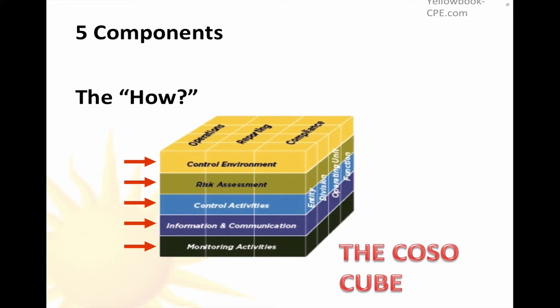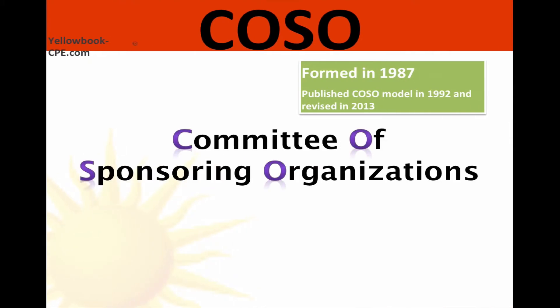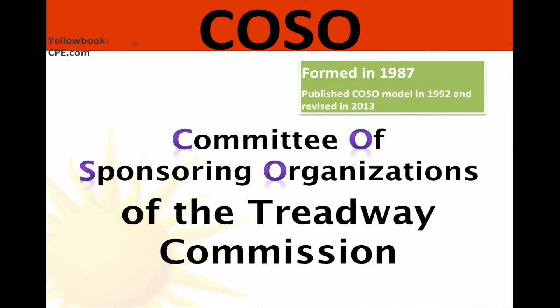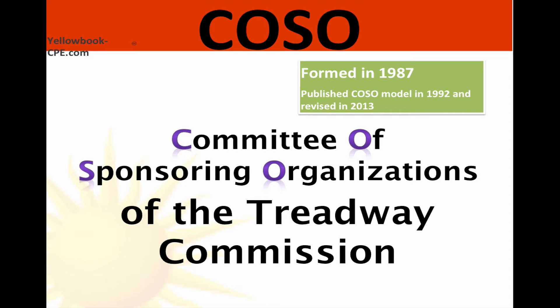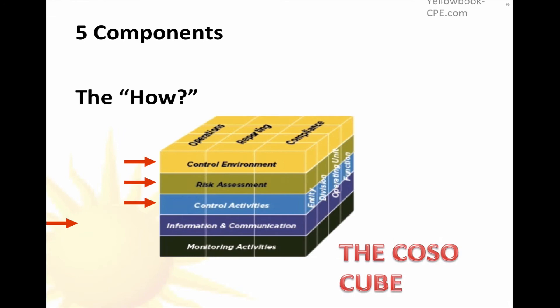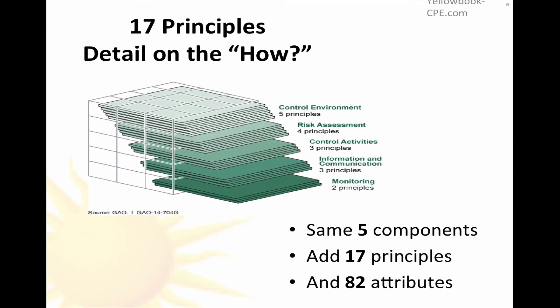So very recently, the COSO organization — this is what COSO stands for, a very odd acronym: Committee of Sponsoring Organizations of the Treadway Commission — they took that FACE of the model, which is non-intuitive, a little tricky. This is not as easy to understand as some other models that we're aware of, and broke it into 17 underlying principles.